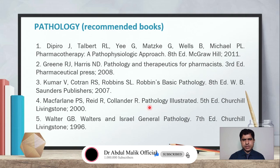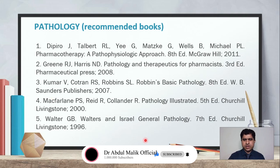The fourth book is Pathology Illustrated, 5th edition, Churchill Livingstone, 2000 — this is a very old edition so you should take a newer one. The fifth book is Walter G.D., Walters and Israel: General Pathology, 7th edition, Churchill Livingstone, 1996. A new edition can be taken for studying general pathology.